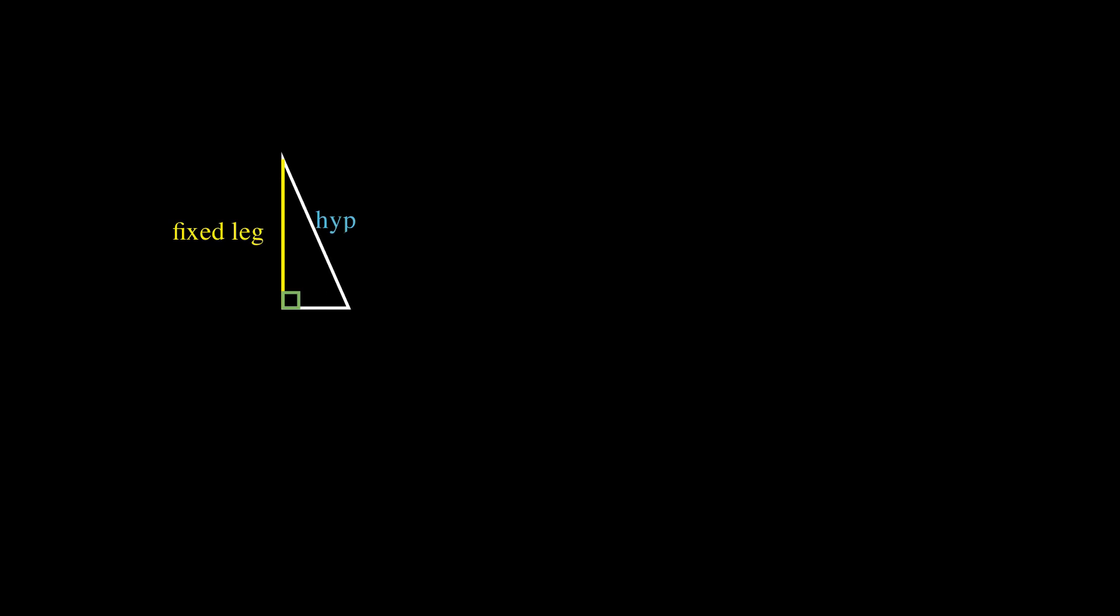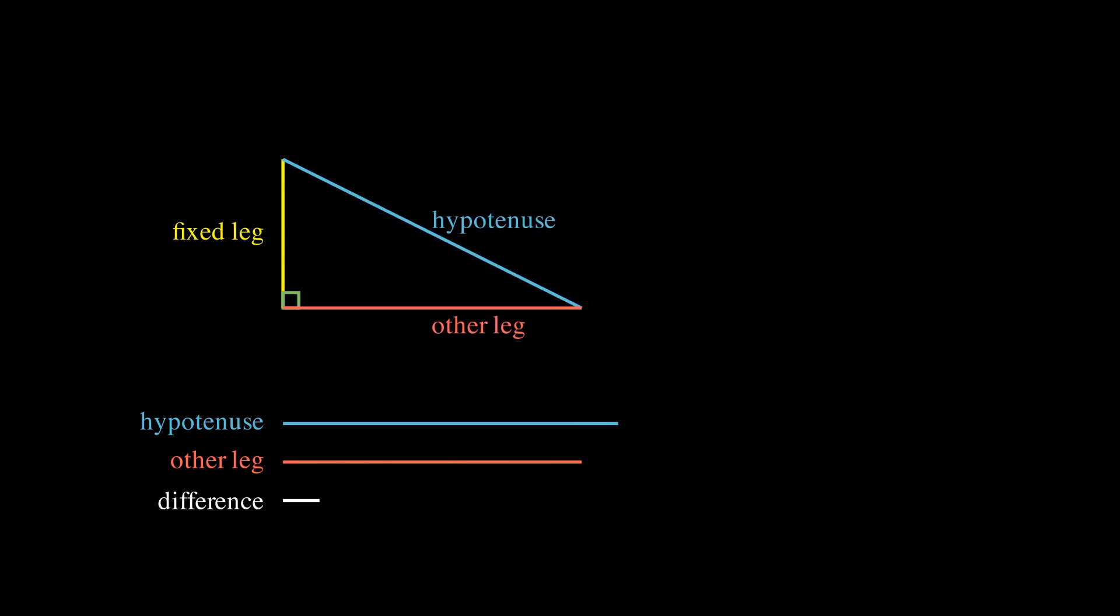We can see that if we make the hypotenuse larger and larger, the other leg has to increase as well, so that we can still make a triangle. The larger we make the hypotenuse, the more similar the hypotenuse and the longer leg have to become.